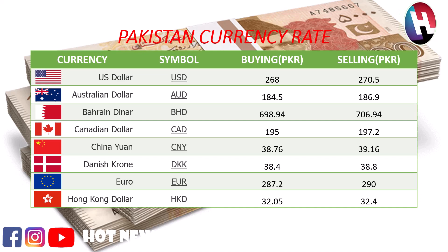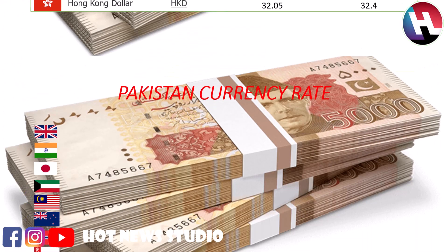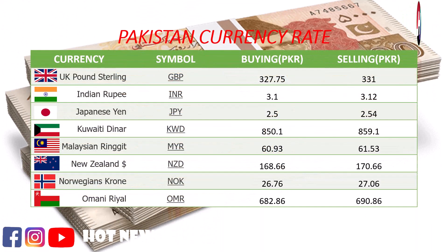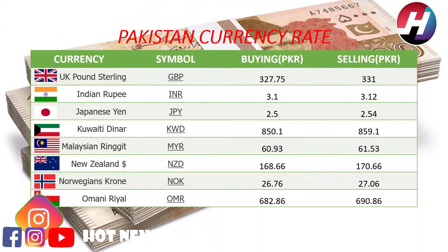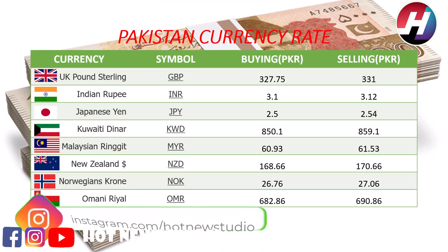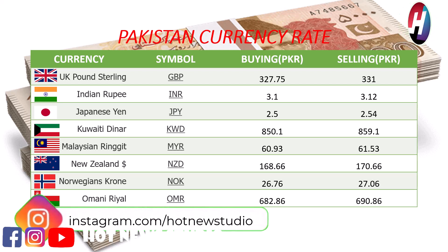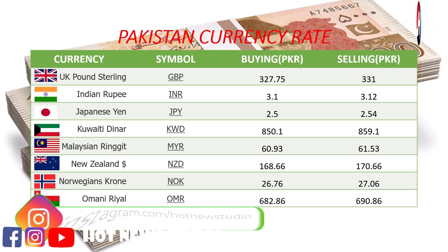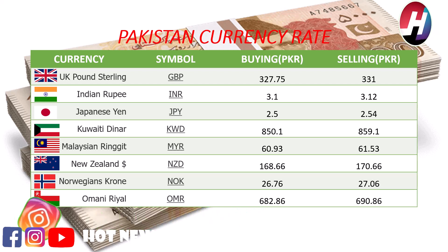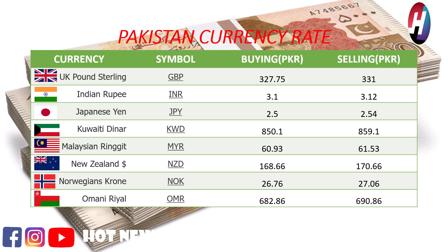UK pound sterling buying price 327.75 rupees, selling price 321 rupees. Indian rupee buying price 3.1 rupees, selling price 3.12 rupees. Japanese yen buying price 2.5 rupees, selling price 2.54 rupees. 2 rati dinar buying price 850.1 rupees, selling price 859.1 rupees.